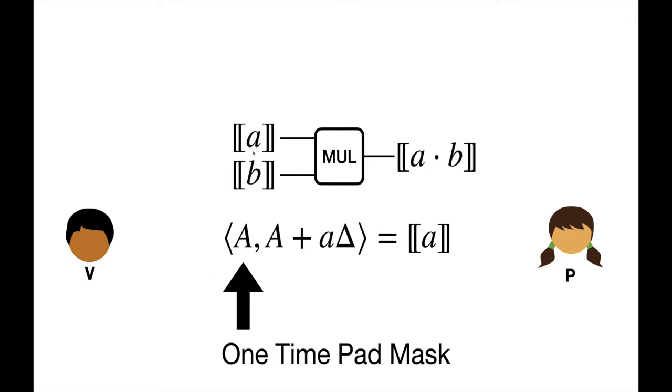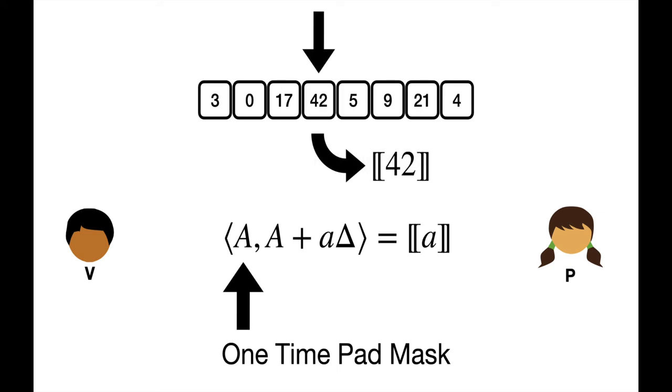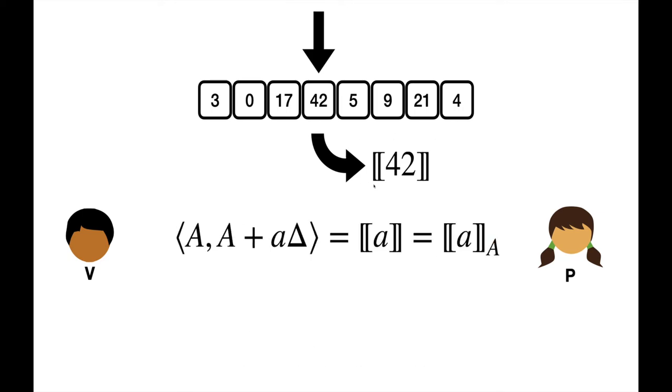Finally, notice that big A acts as a simple one-time pad on the authenticated value A times delta. These one-time pads are central to ProRAM, and we will discuss them for the remainder of this talk. Our ZK proof system implements arithmetic circuits that propagate authentic sharings. Recall that our goal is to implement a RAM that works with arithmetic circuits. Therefore, the RAM should produce as output and accept as input authenticated sharings. Before moving on, let me introduce one final piece of notation. For a sharing with mask big A, I will sometimes write big A in the subscript of the authenticated sharing.